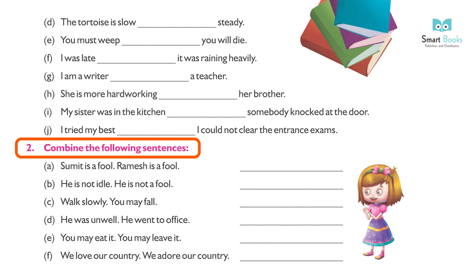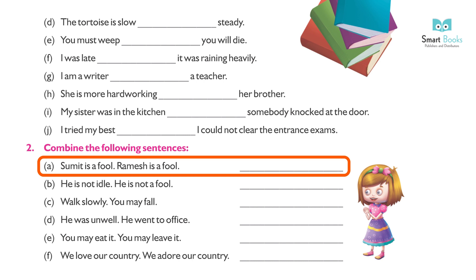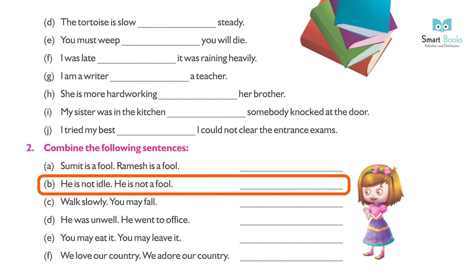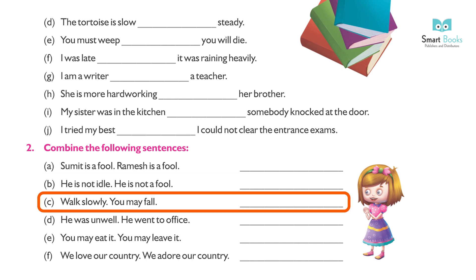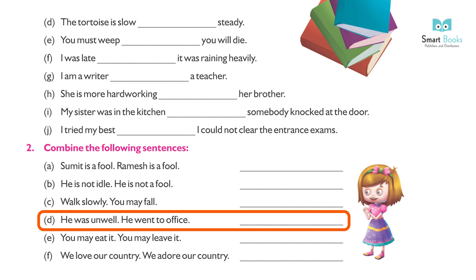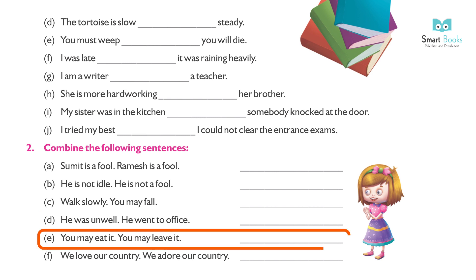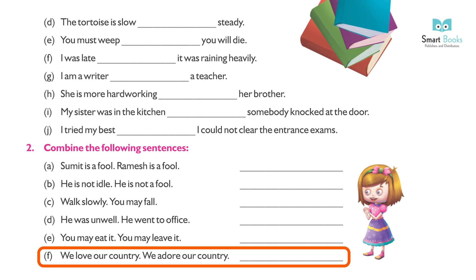Practice time. Exercise 1 — Use the correct conjunction: (a) You will fail if you do not work hard. (b) I want to buy it as it is very beautiful. (c) Make hay while the sun shines. (d) The tortoise is slow and steady. (e) You must work or you will die. (f) I was late because it was raining heavily. (g) I am a writer and a teacher. (h) She is more hard-working than her brother. (i) My sister was in the kitchen when somebody knocked at the door. (j) I tried my best but I could not clear the exam.